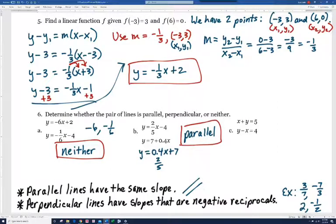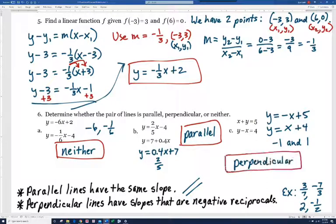On part C, you would want to solve for y first. I subtracted x on the first equation and got y = -x + 5, or -1x + 5. On the second one, to get y by itself, I need to add x to both sides, and I get y = x + 4. So you can see our slopes are -1 and 1. These are negative reciprocals, and so the lines are perpendicular.